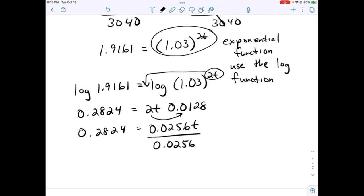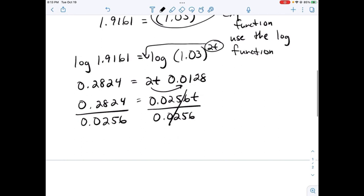When we divide 0.2824 by 0.0256, we get approximately 11.03.